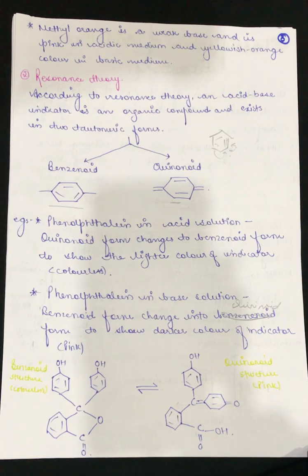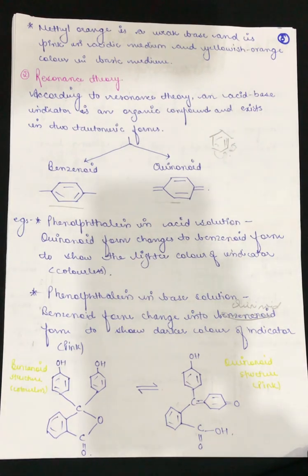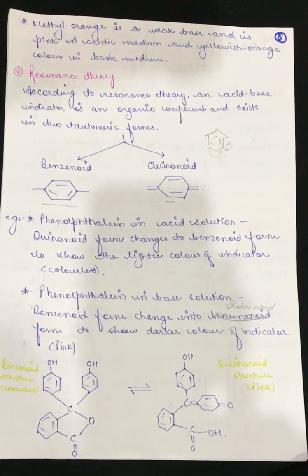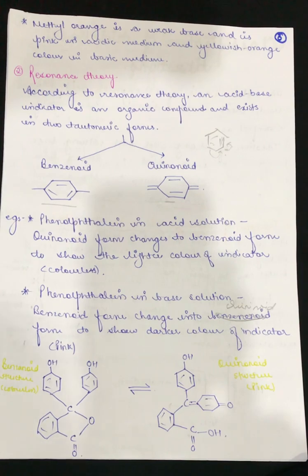To summarize for the exam, first write a brief introduction about acid-base indicators and their use in titration, then write the two major theories. For Oswald theory, explain it depends on ionized and unionized forms and give examples like methyl orange or phenolphthalein. For resonance theory, write an introduction about the benzenoid and quinoid forms and give one example such as phenolphthalein or methyl red. These are the two theories of acid-base indicators.